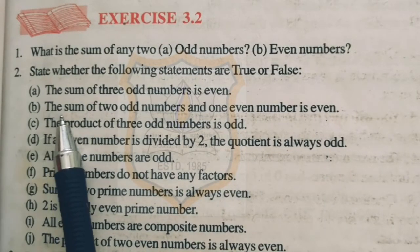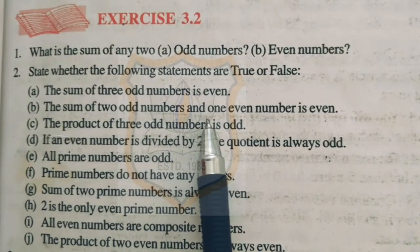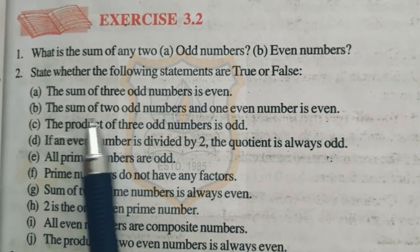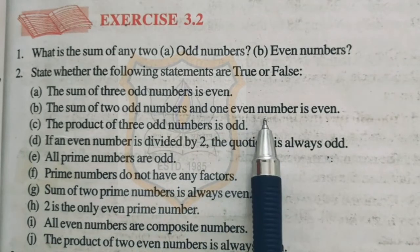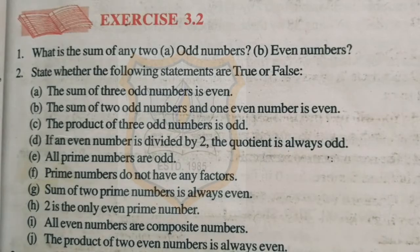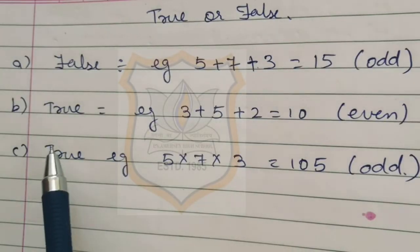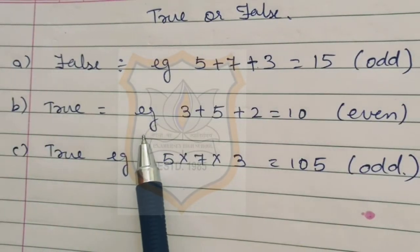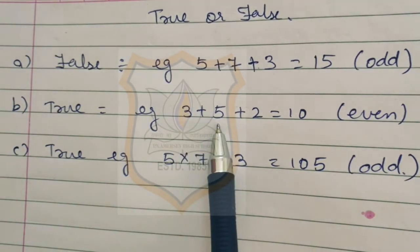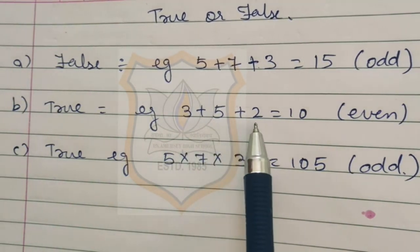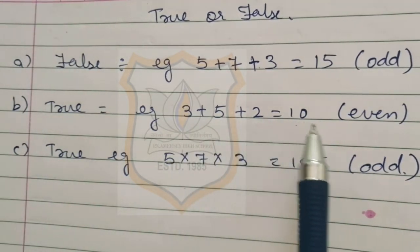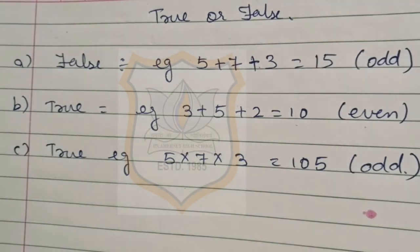Part B: the sum of two odd numbers and one even number is even. Here we add two odd numbers and one even number, and the result is an even number. The statement is true. For example, 3 and 5 are odd numbers; 3 plus 5 is 8, and 8 plus 2 is 10. So 10 is an even number, and the statement is true.